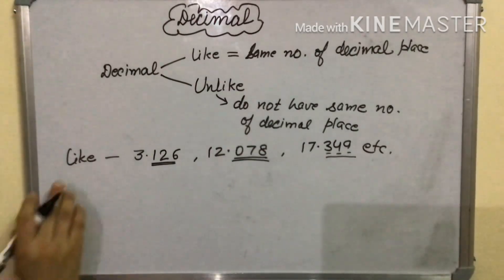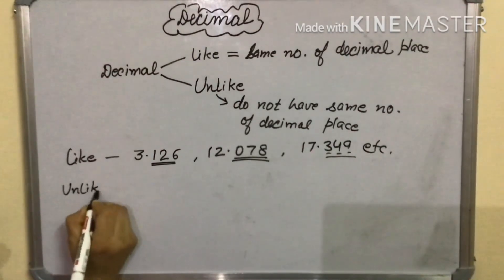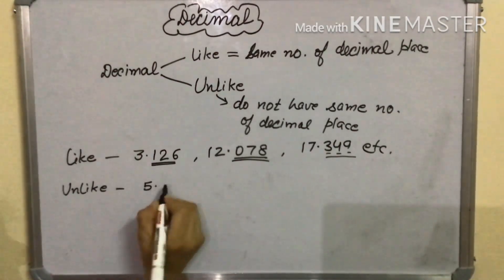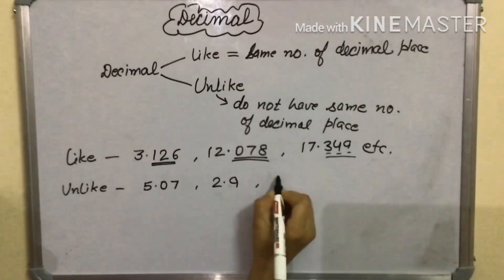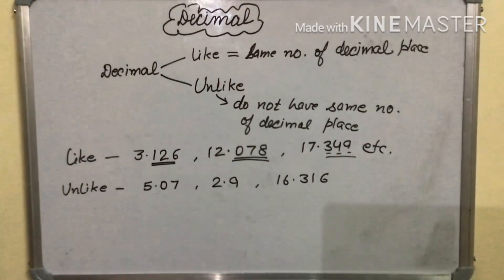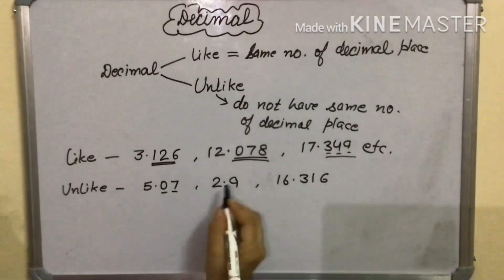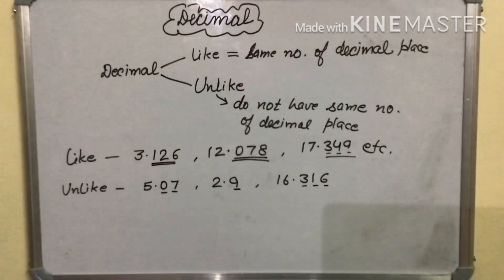Now some examples of unlike decimals. Suppose 5.07, 2.9, 16.316. These are unlike decimals because in this number we have 2 decimal places and in this number we have only 1 decimal place and in this number we have 3 decimal places.